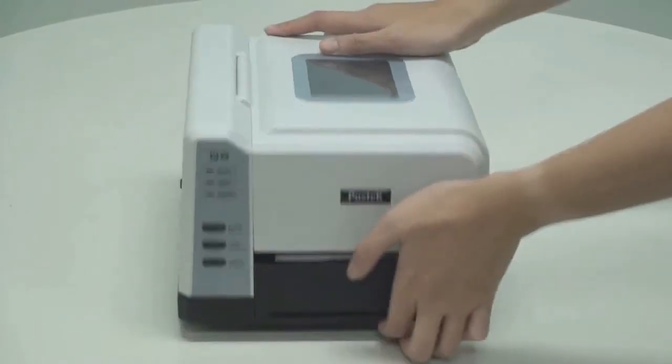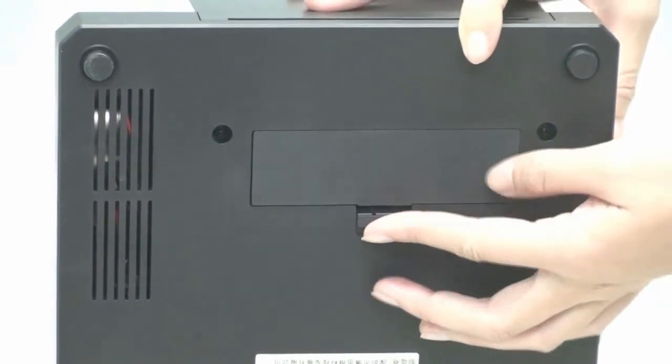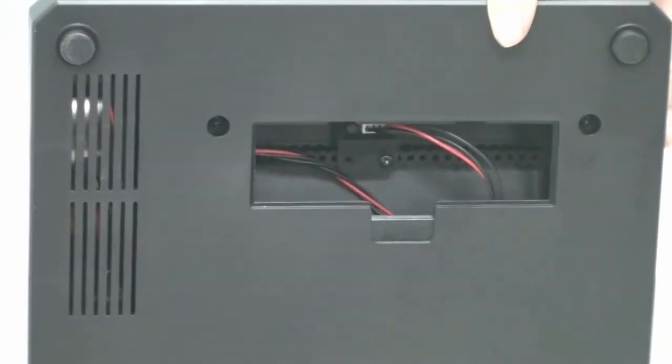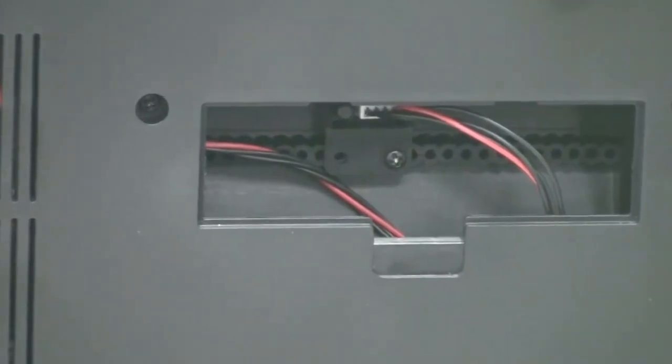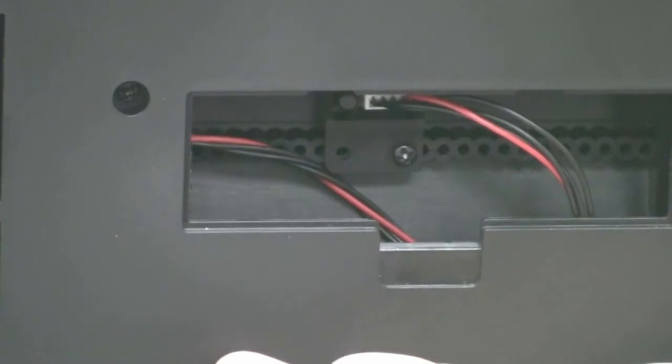Next, check to make sure the media sensor is below the labels. To adjust the position of the media sensor, remove the cover located on the underside of the printer. Remove the screw and move the media sensor to the desired position. Once set, tighten the screw and replace the cover.